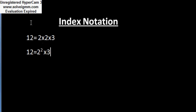As you can see, 2 is repeating 2 times, so you can write 2 raised to power 2. And here we have 3 only one time, so you will write 3 as it is. This form is called the index notation form.